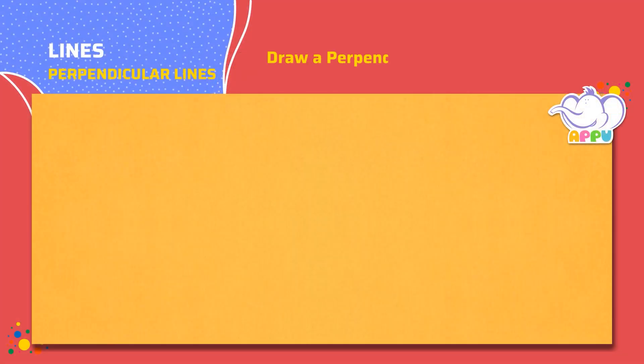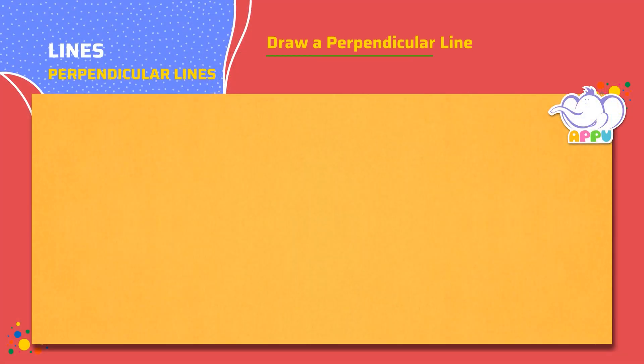Draw a perpendicular line. Draw a perpendicular line to the line at the given point.